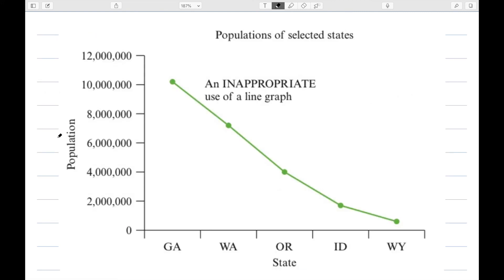This is an example of an inappropriate use of a line graph. Line graphs are not appropriate for displaying data in categories that don't vary continuously. For instance, in this case, we were looking at state populations. It doesn't make sense to use a line graph here because there's no logical reason to connect Georgia to Washington, Washington to Oregon, etc. So this would not be an appropriate use of a line graph.